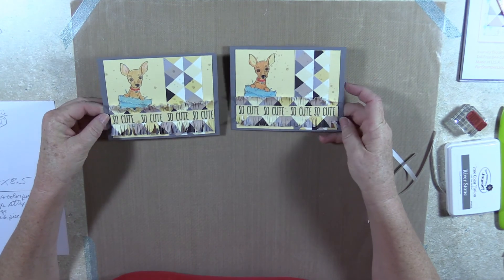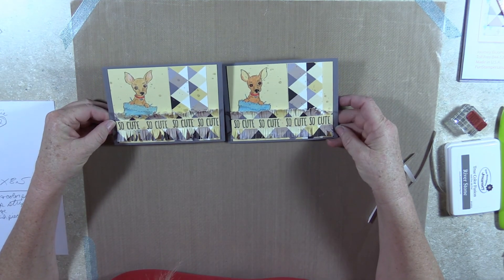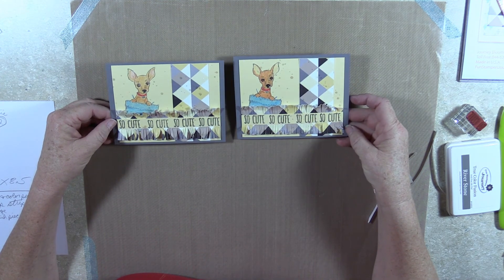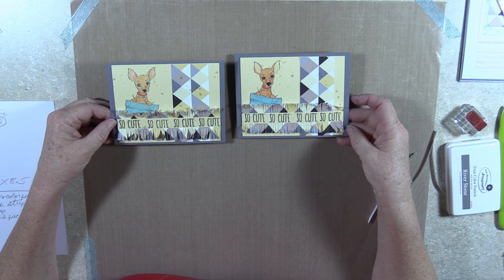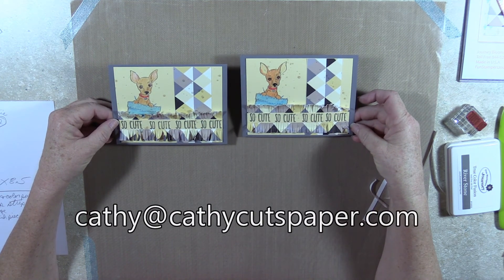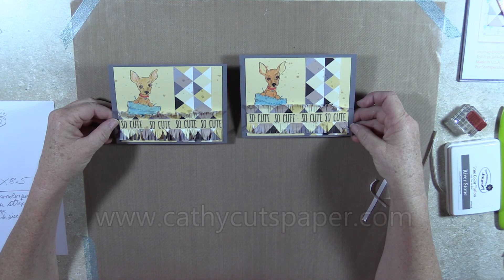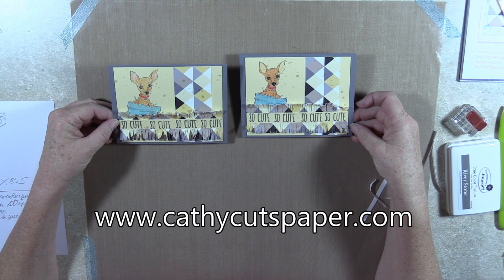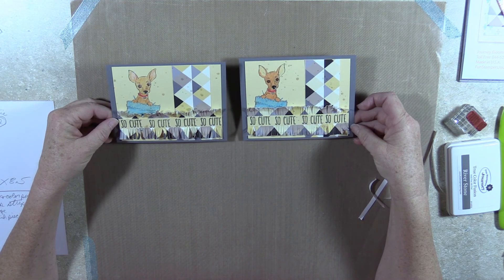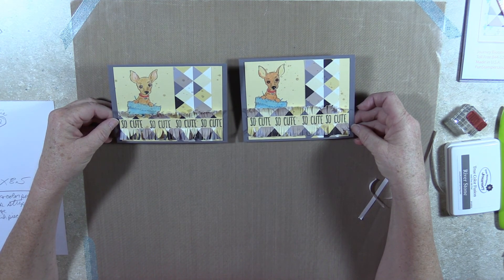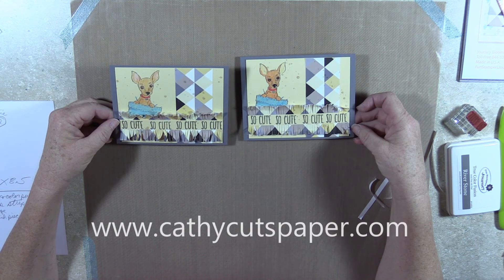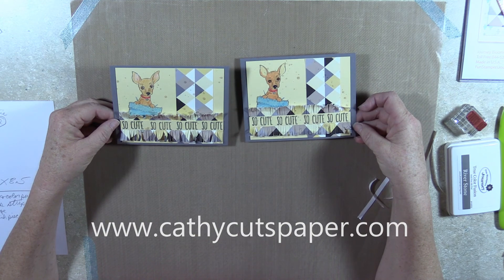We have two puppies with fringe, and they are so cute. I hope you enjoyed this project. If you have any questions, you can comment below, or you can contact me, Kathy, at KathyCutsPaper.com. My website is KathyCutsPaper.com, and I'd appreciate it if you would like and subscribe. Oh, also, the dimensions and the product list will be on my blog, which is also on KathyCutsPaper.com. Thank you very much, and we'll see you next time. Bye-bye.